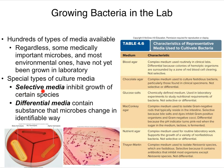Selective media only allows some species to grow, usually based on a biochemical or genetic characteristic. For example, if some bacteria are resistant to penicillin and most are not, a growth media containing penicillin will only allow penicillin-resistant bacteria to grow — you are selecting for that trait. Similarly, MacConkey agar contains crystal violet, which prevents the growth of gram-positive organisms, so only gram-negative organisms will grow on it. That makes it a selective media.